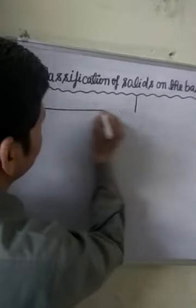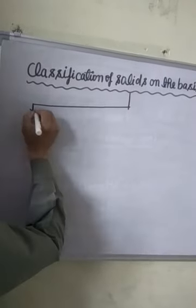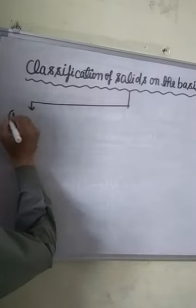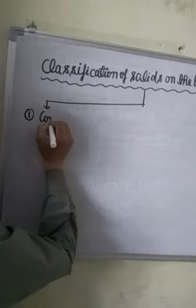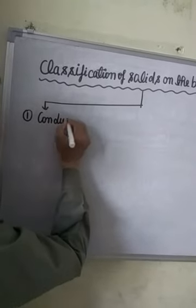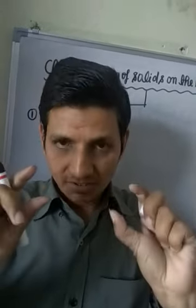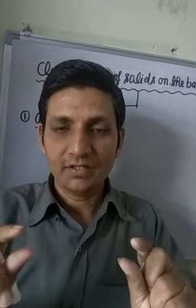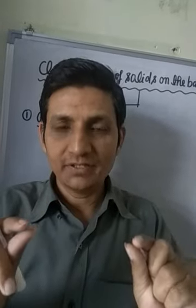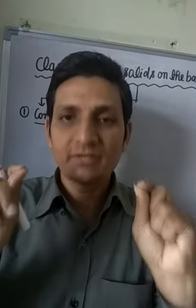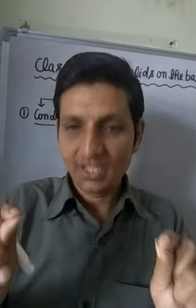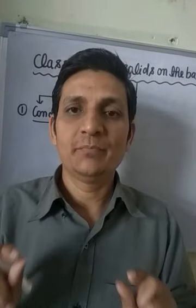Solids are classified as: number one, conductors. What are conductors? Solids which have conductivity ranging between 10 to the power 4 to 10 to the power 7 ohm inverse meter inverse are called conductors.